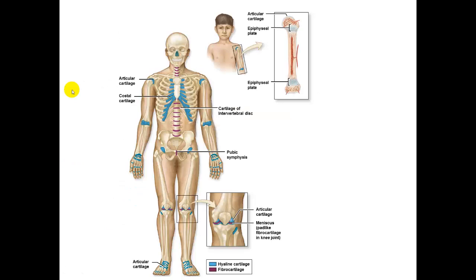Here is a figure showing the skeletal system as well as a picture of a long bone in a child. The cartilage is highlighted so you can see all the places where you find hyaline cartilage — at the ends of long bones and at the sternum — or fibrocartilage in the intervertebral discs, pubic symphysis, and knees. In the long bone of a child, you'll find cartilage in the epiphyseal plate, more commonly called the growth plate.